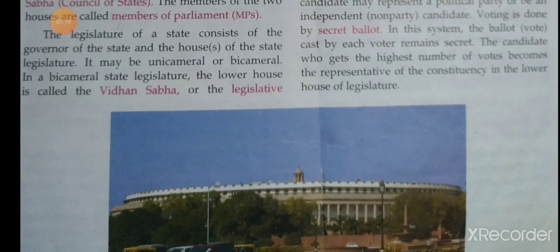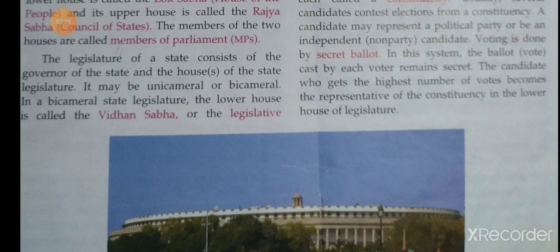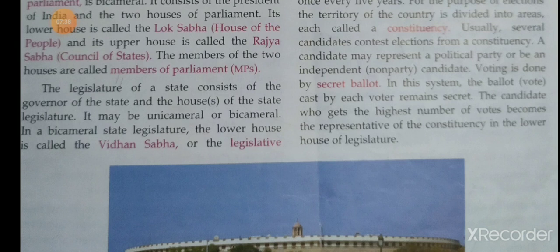The upper house has both elected members and nominated members. The elected members are elected indirectly — elected MLAs elect members to represent their states in the Rajya Sabha. Representatives from union territories are chosen according to rules laid down by parliament.